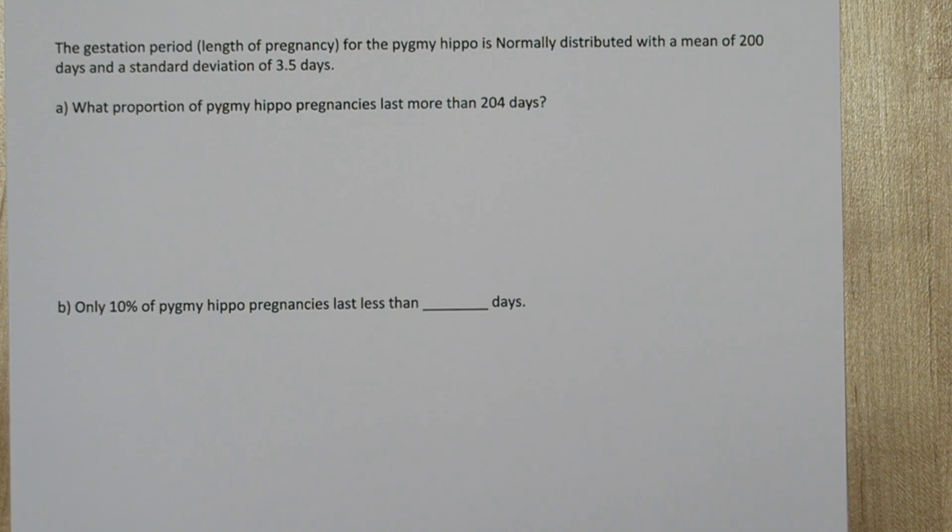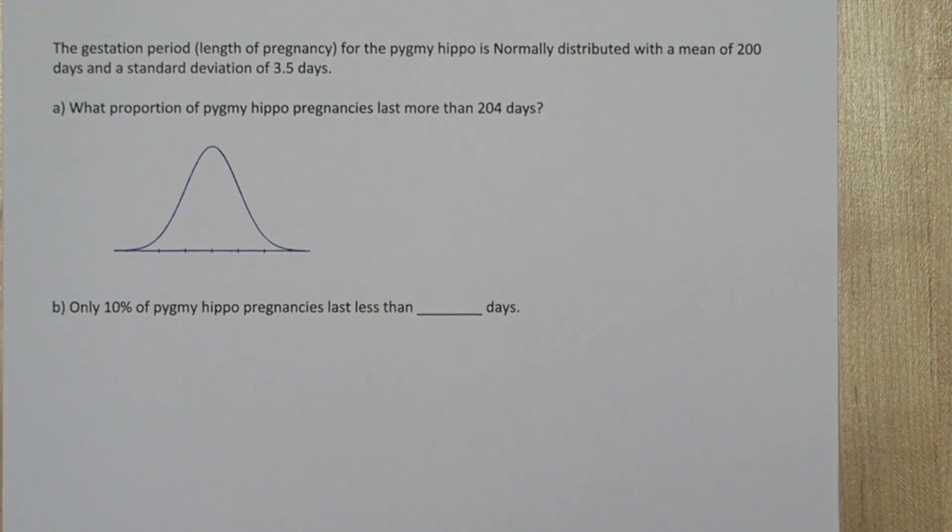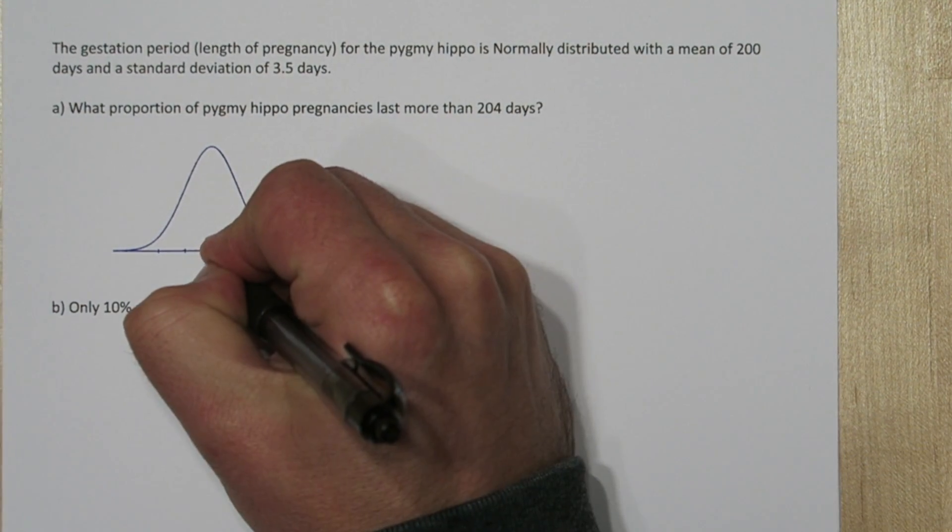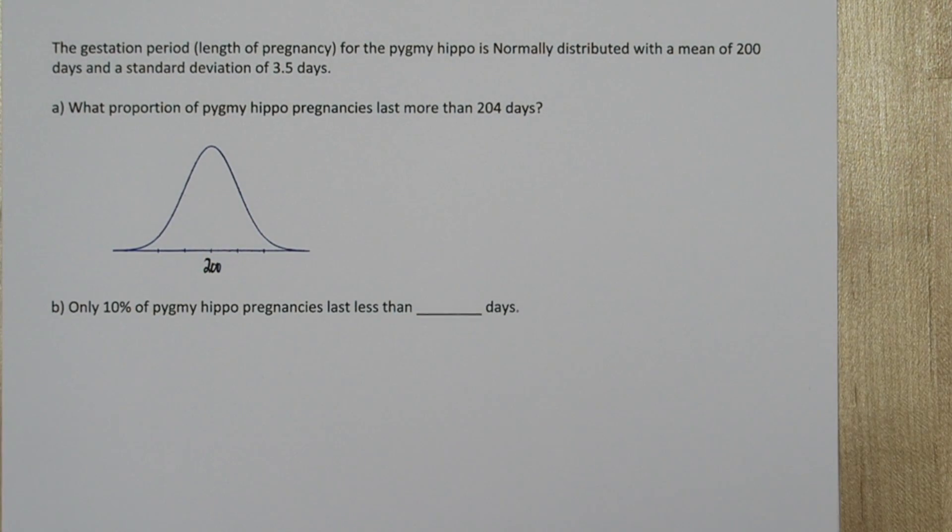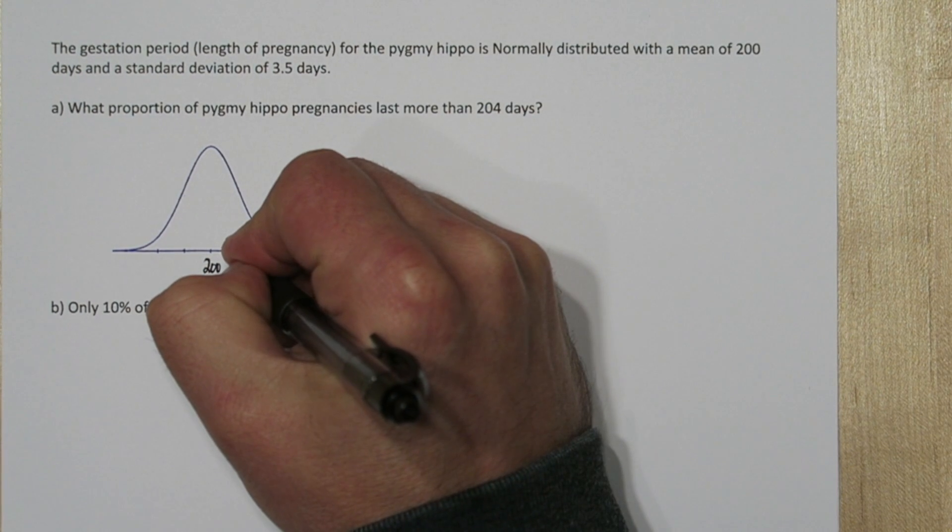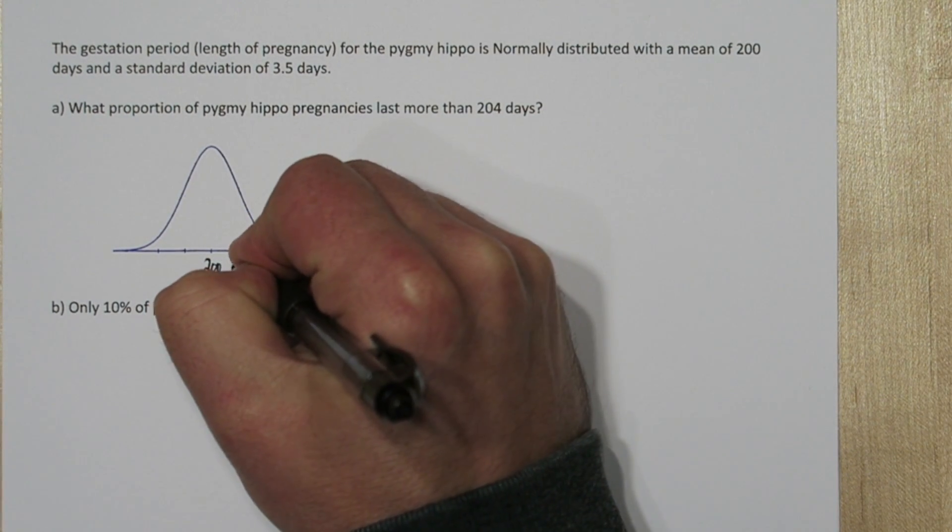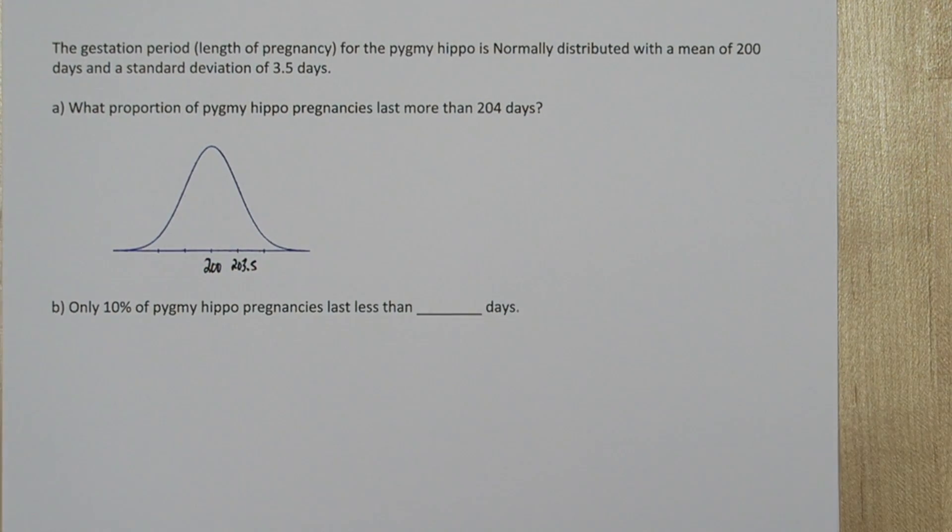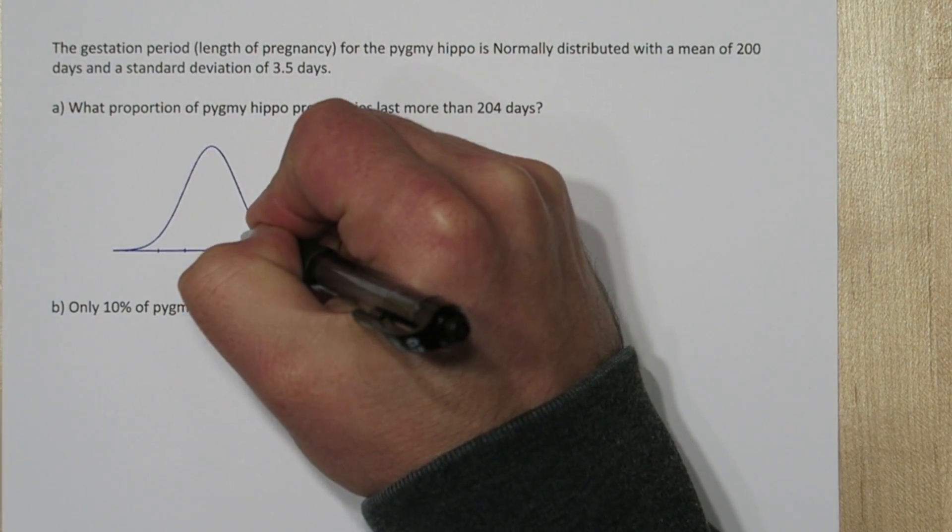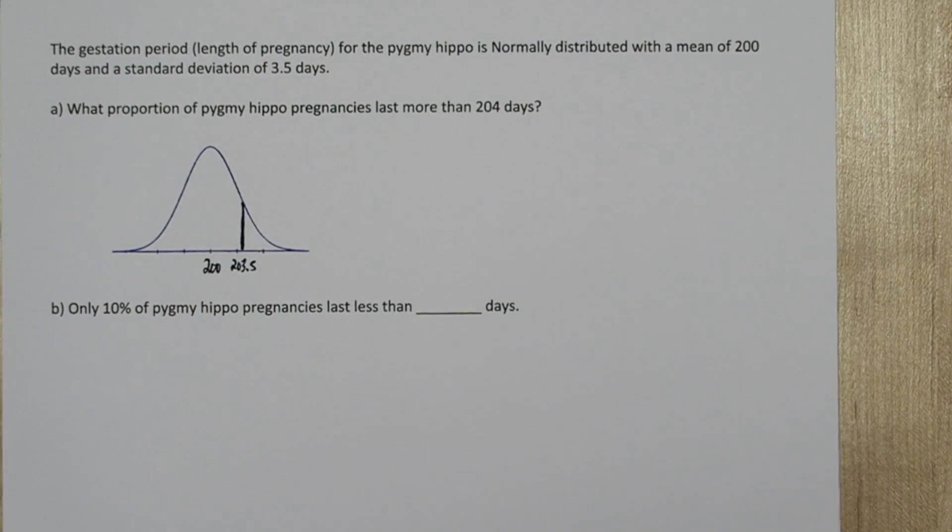Since we know the gestation period is normally distributed, let's draw a normal distribution. The mean is 200, so that's right here in the middle. And since the standard deviation is 3.5, we know right here is 203.5. So 204 must be about right here.